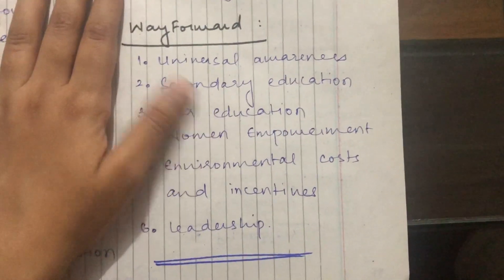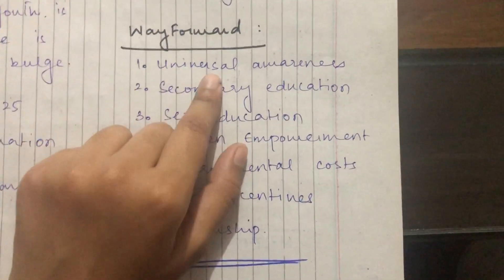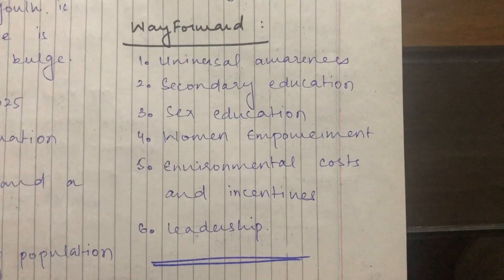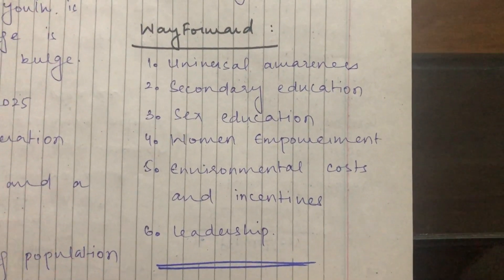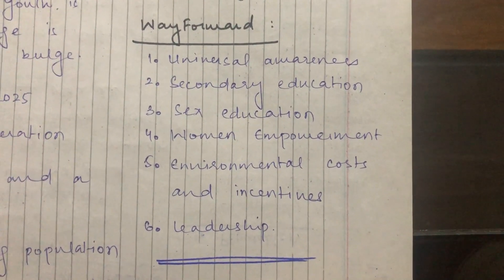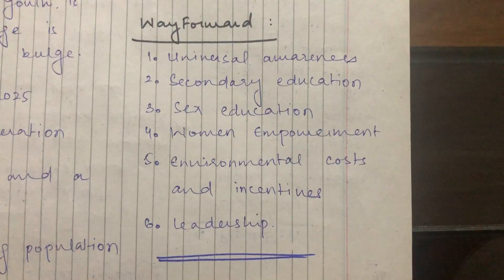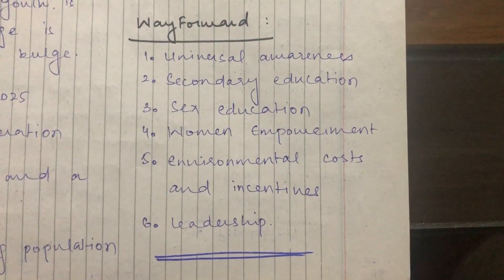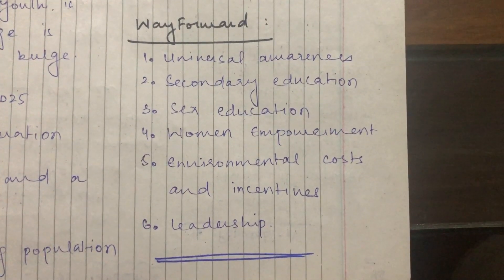For population control, different means include universal awareness, secondary education, sex education, women empowerment, environmental costs, incentives, and leadership that can implement youth and population control measures in a proper way.